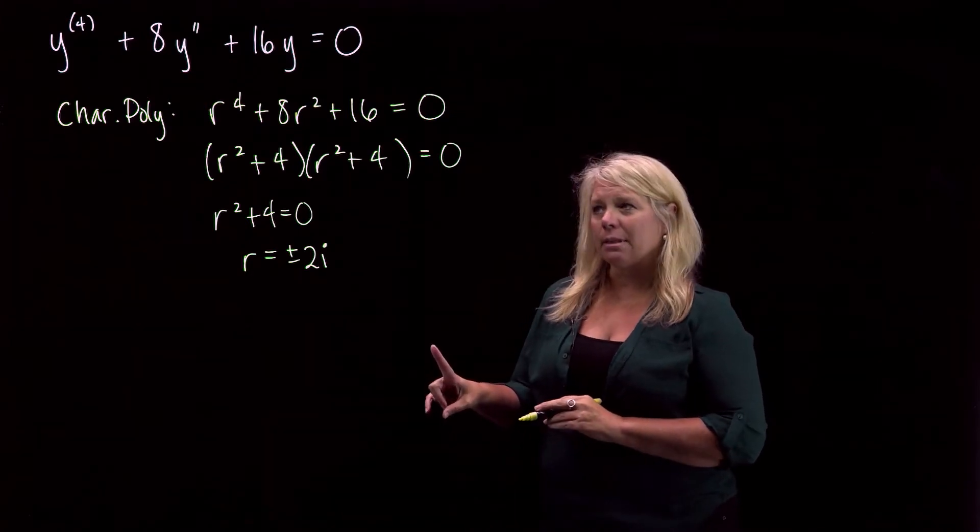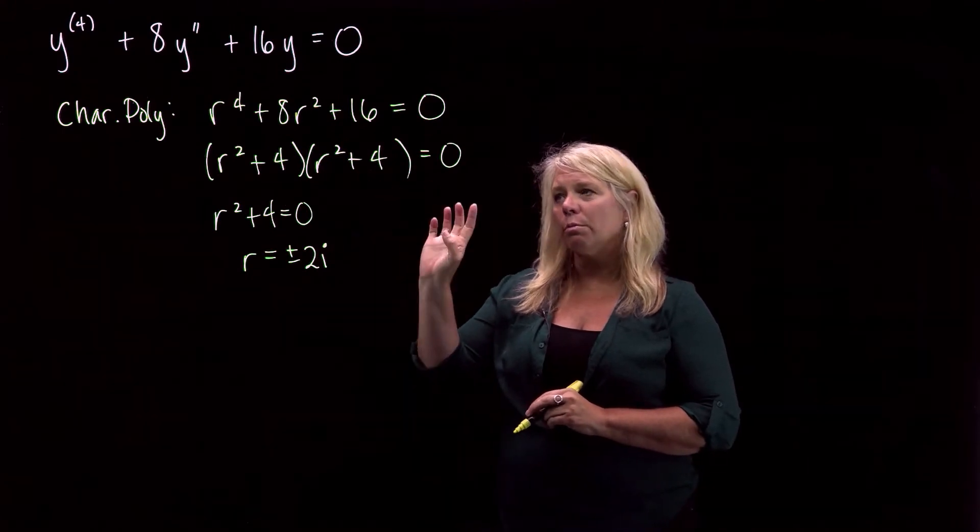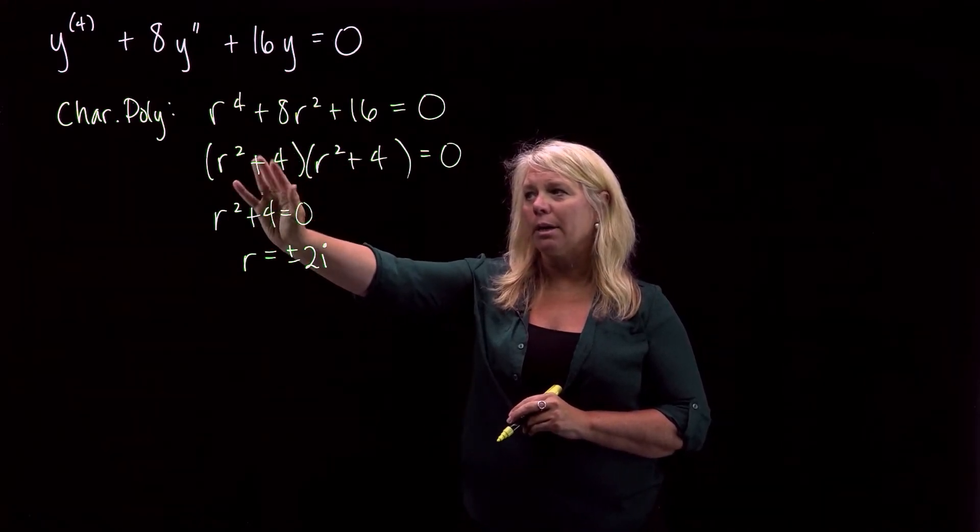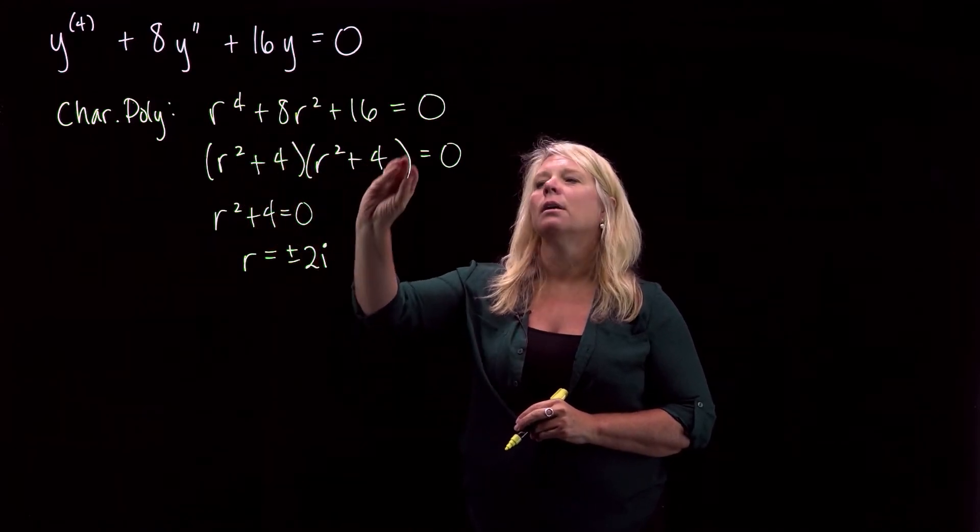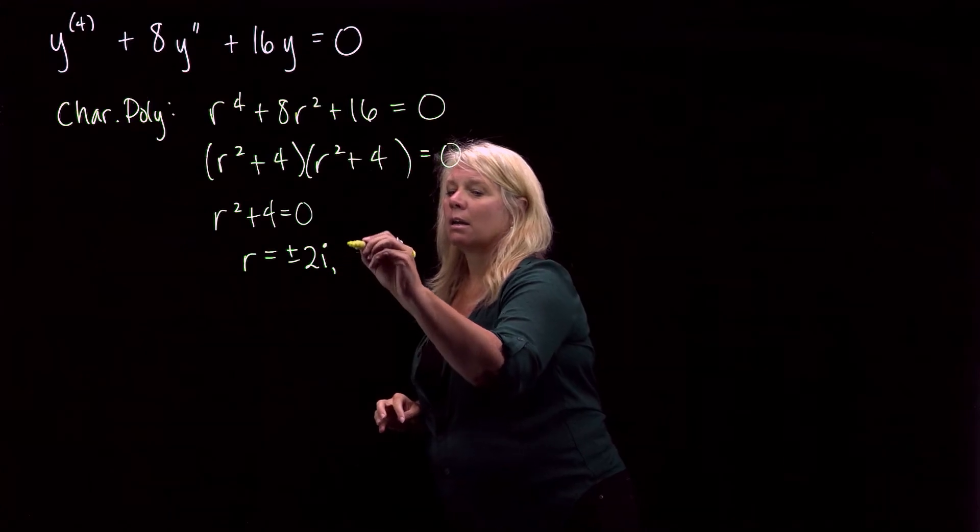But the other important thing about this example is that both of those have multiplicity two. Those both occur twice because I have these two factors. So I'll get r equals plus or minus two i from one of these factors. And then another set of r equals plus or minus two i again.